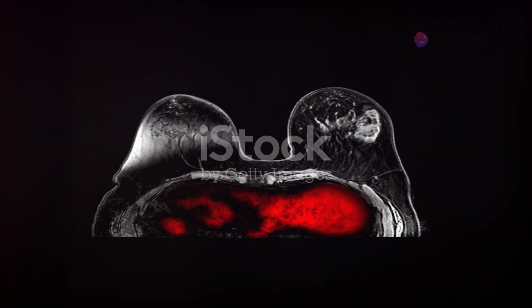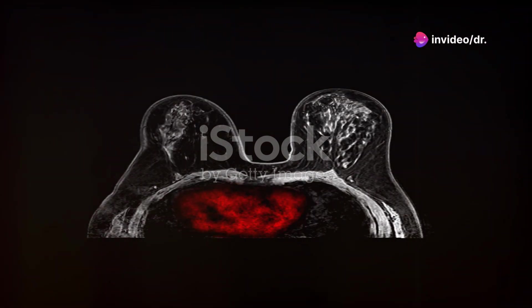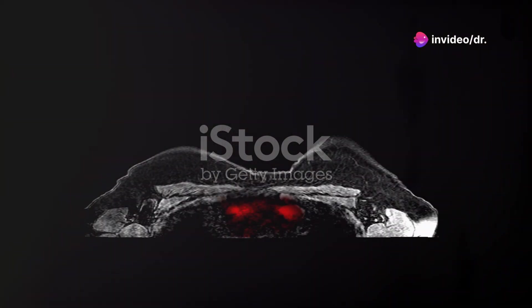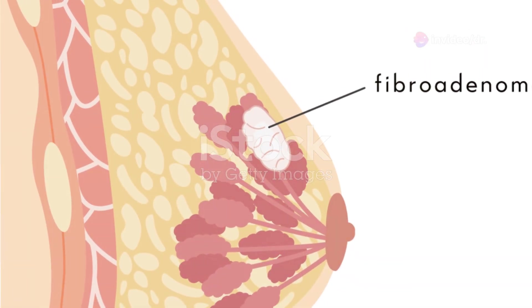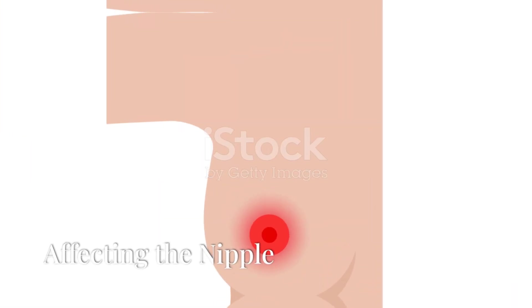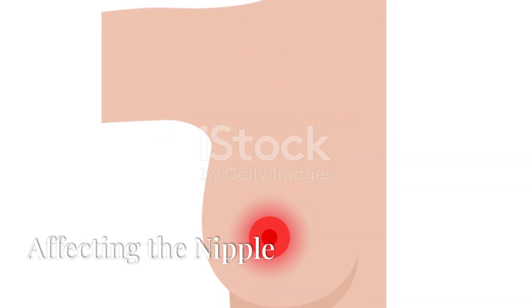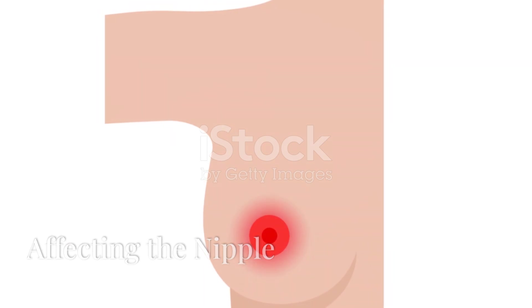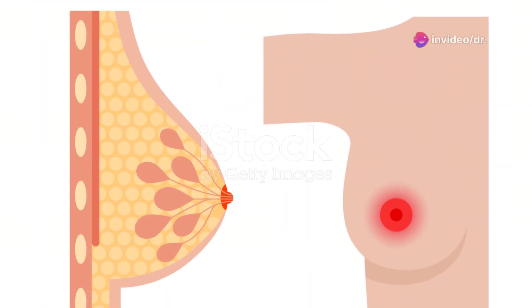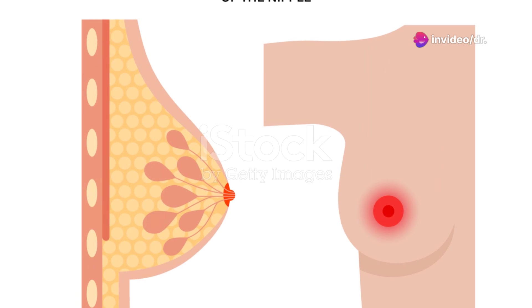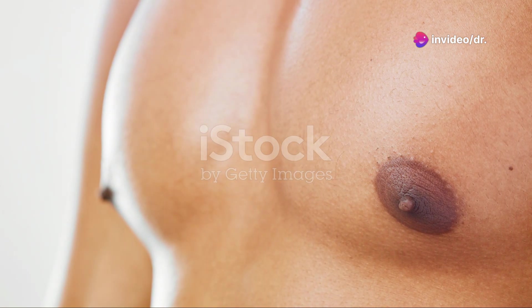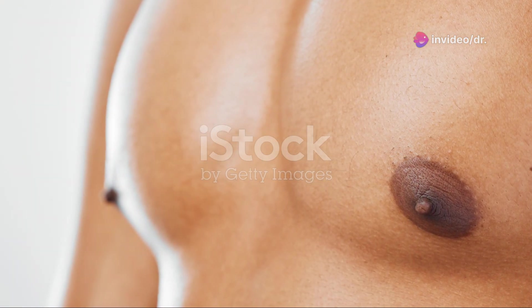Phyllodes tumors are pretty rare but worth knowing about. These tumors grow in the connective tissue of the breast and can be benign or malignant. Paget's disease of the breast is a rare type of cancer that affects the nipple and areola. You might notice changes to your nipple like redness, scaling, crusting, or even a flattened nipple.